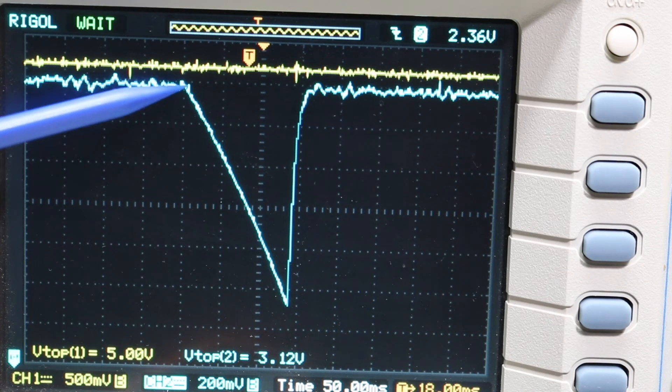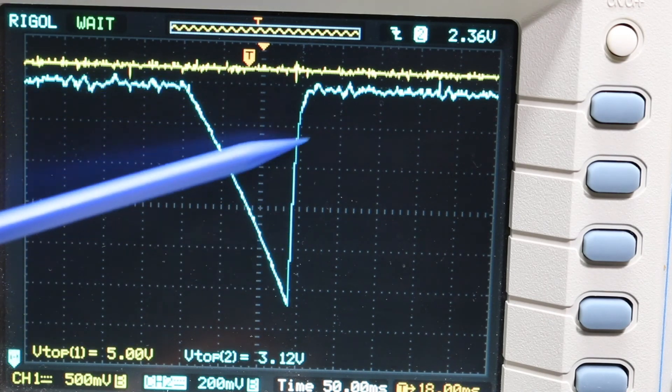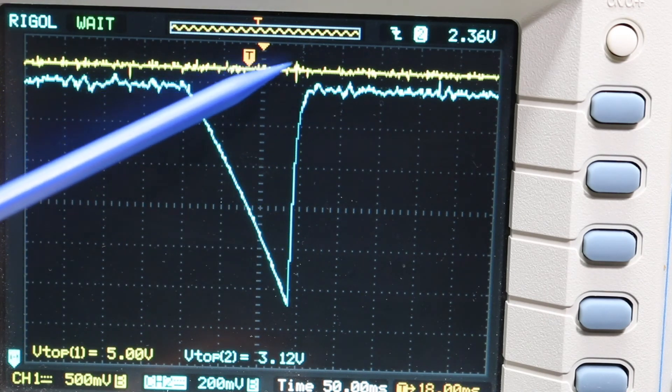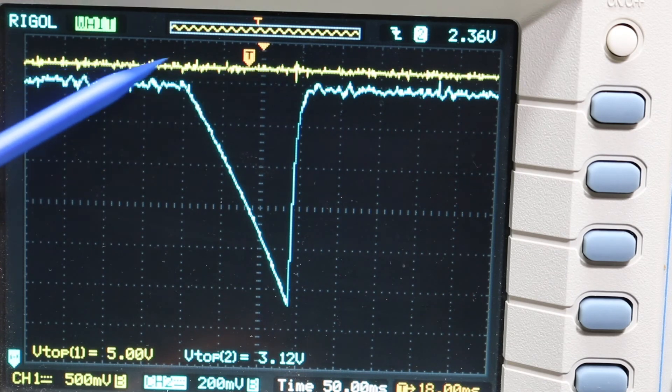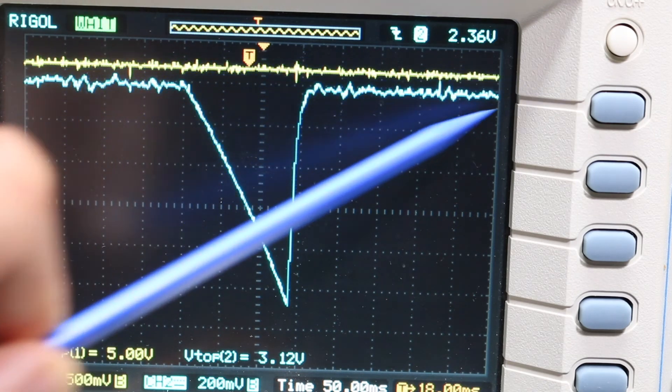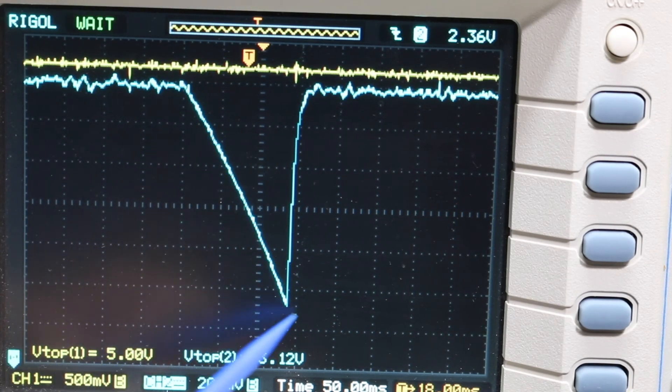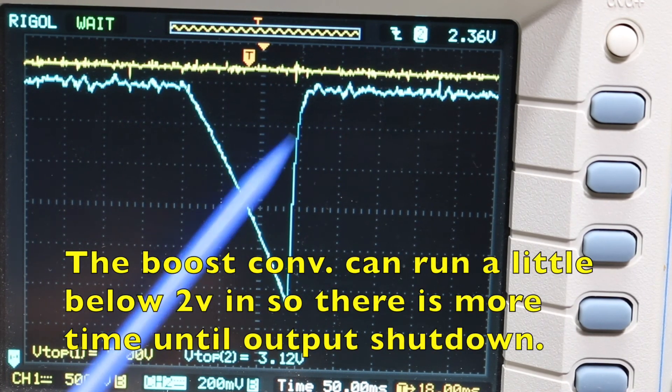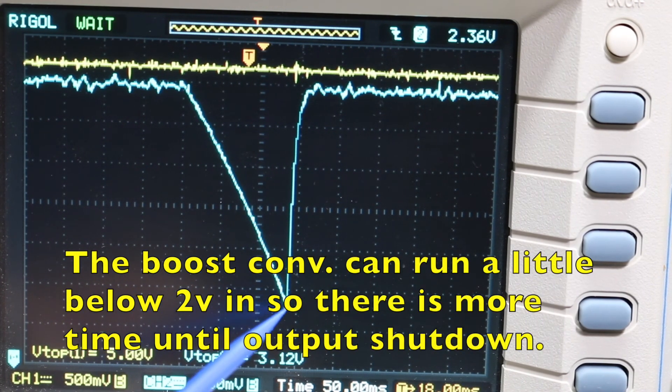So here I momentarily took away input power and while still driving the output light, I was able to keep 5 volts all the while. And counting the time here, that was cutting it close, that was almost 140 or so milliseconds.